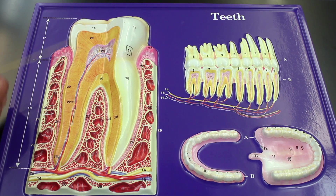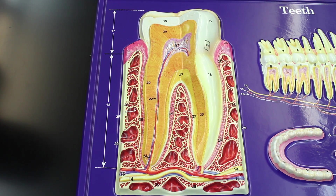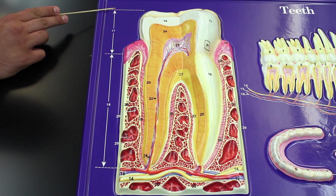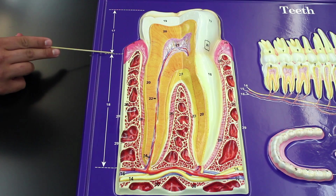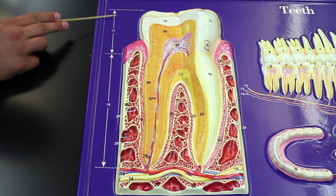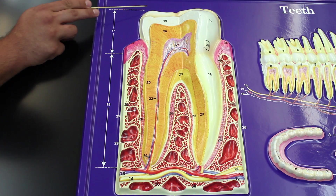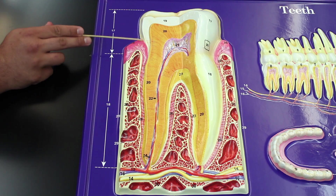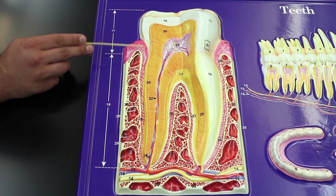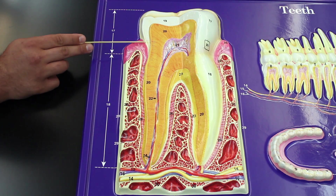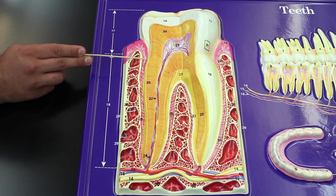Let's start by looking at this tooth. Starting from the top part down to the bottom, that outlined space represents the crown of the tooth. So from the top of the tooth down to where the gingiva is — that's the crown. The gingiva is snugly situated right around that part of the tooth, and that area is called the neck.